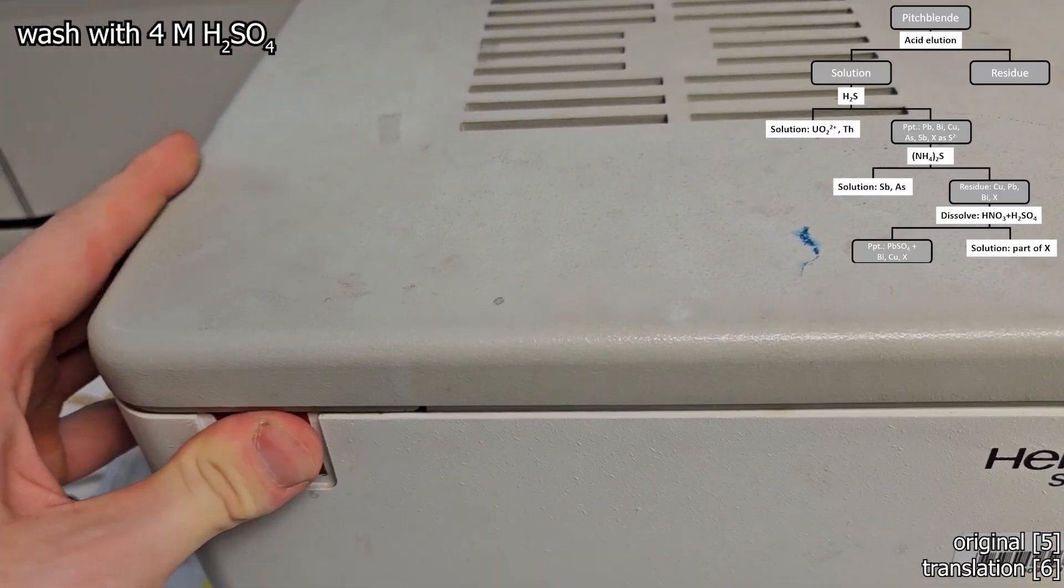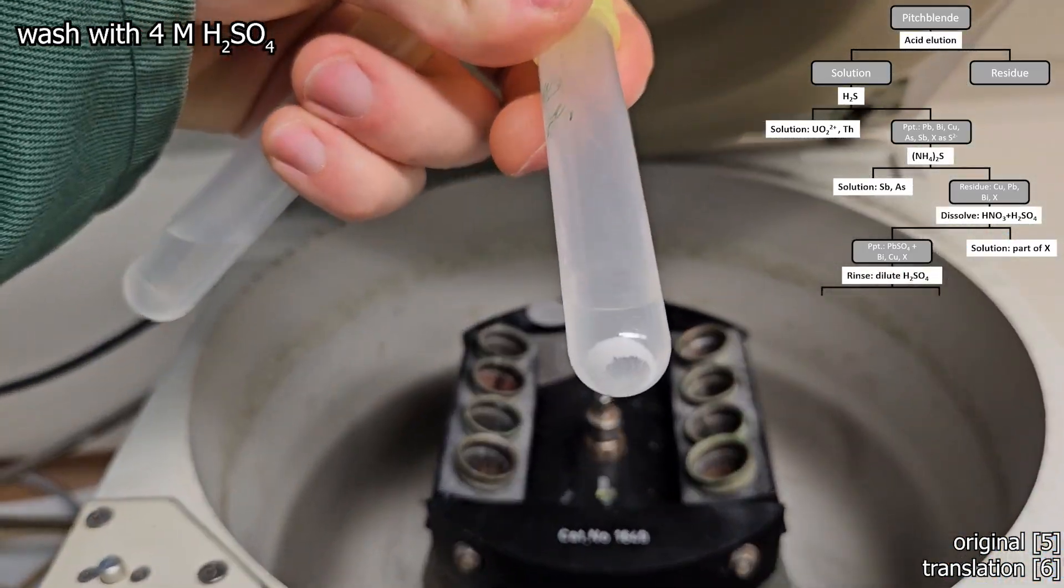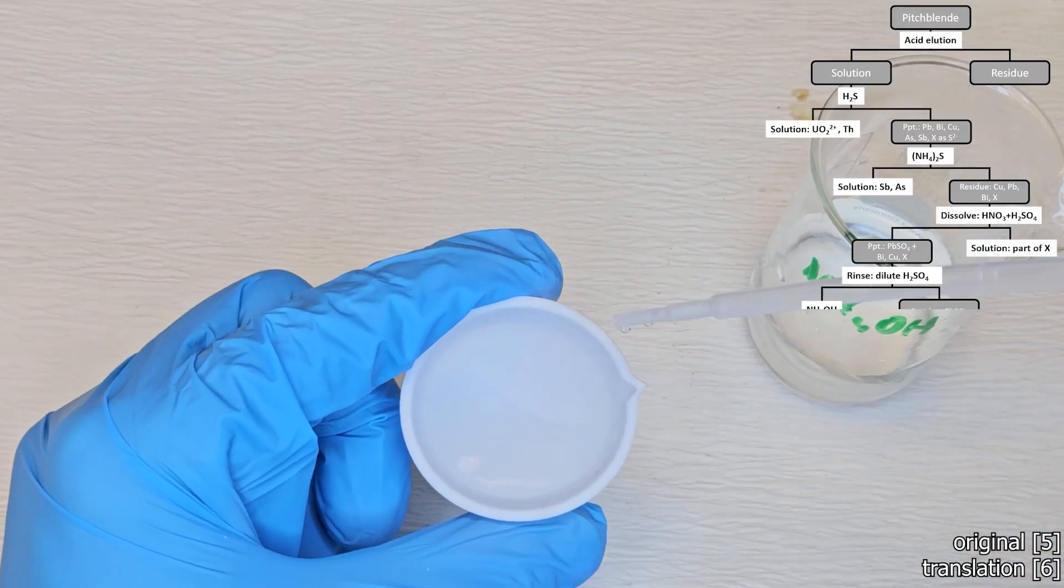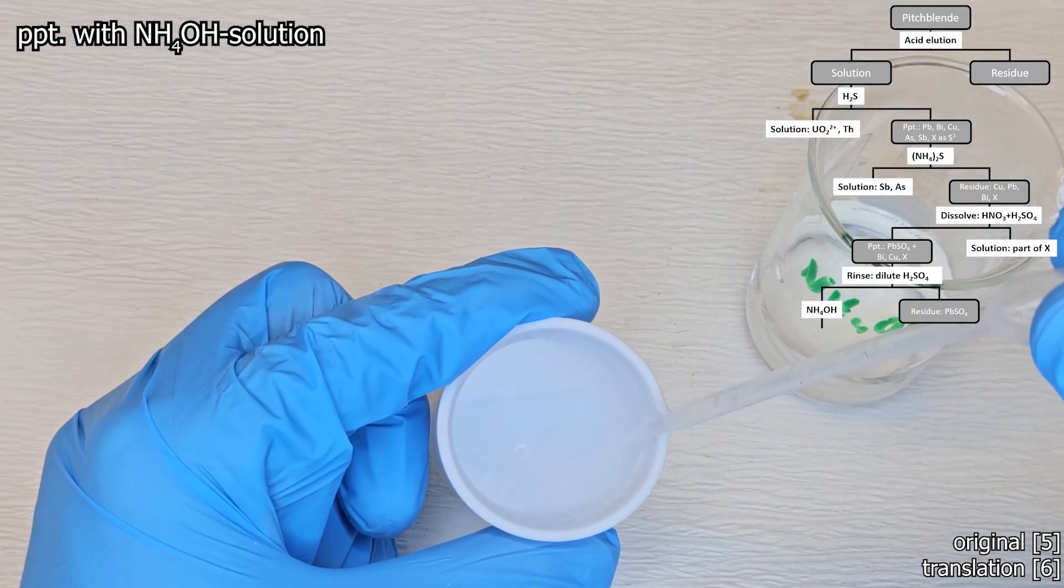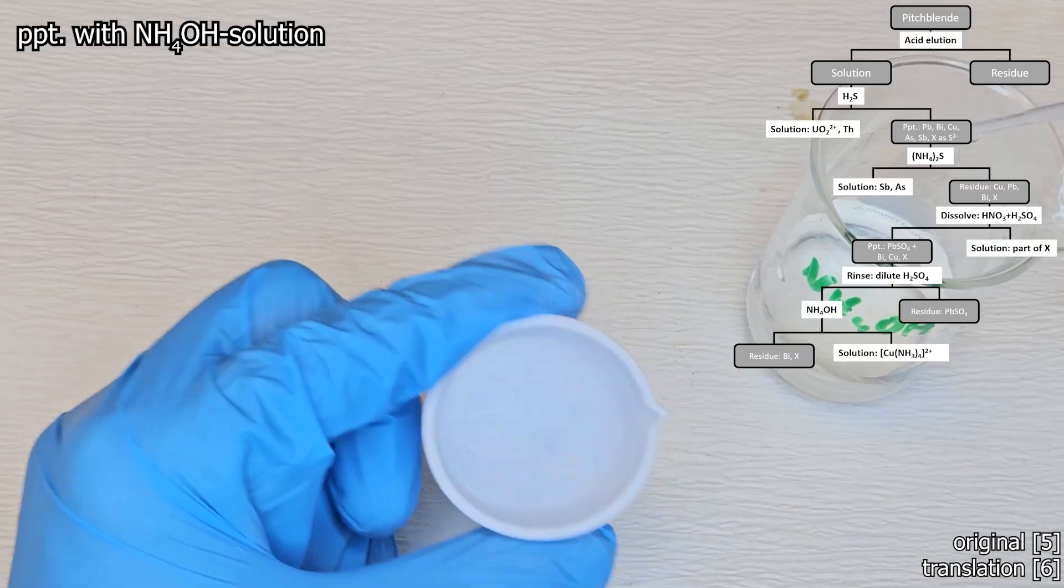After centrifuging the lead-barium-radium sulfate residue, the solution with polonium, bismuth and copper is then washed again with sulfuric acid. The sulfuric acid is then mixed with ammonia solution.